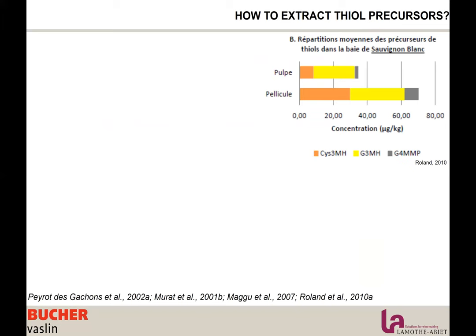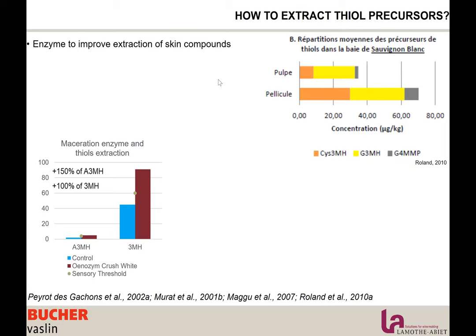After harvest, we want to extract all these precursors. They are present mainly in the skins. You can use enzyme — trial results show that when using maceration enzyme, we increase the concentration of 3-MH considerably, and by indirect result, the yeast transforms more 3-MH, increasing acetate 3-MH as well. This is very important because by using maceration enzyme, we pass above the sensory threshold — from a wine that doesn't smell of thiols to one that is very expressive.